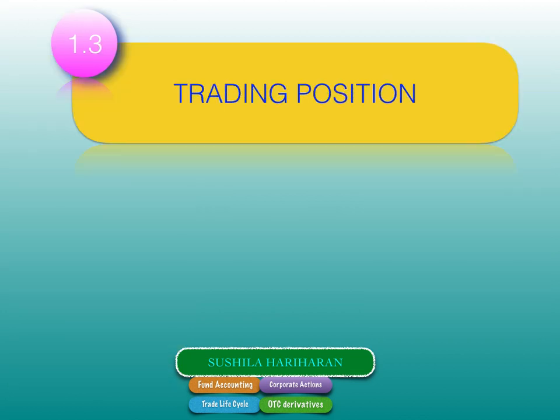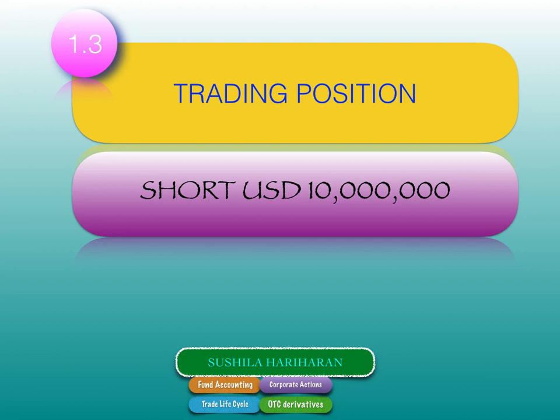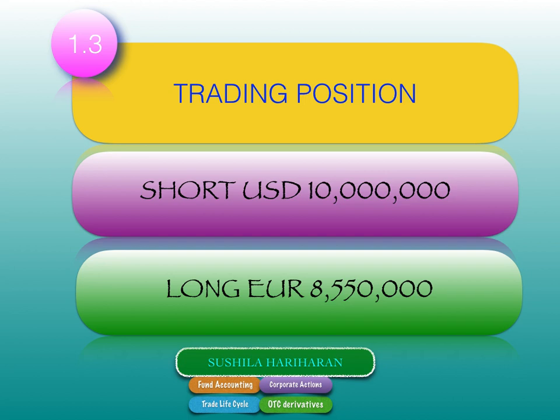The trading position for Hari Hedge Fund is short on USD 10 million and long on EUR 8.550 million. How do I get EUR 8.550 million? It's simple — I apply the rate of 0.8550 to the 10 million dollar position. This is very important because in FX trading and settlements, if you are long in one currency, you are short in the other currency in the pair.